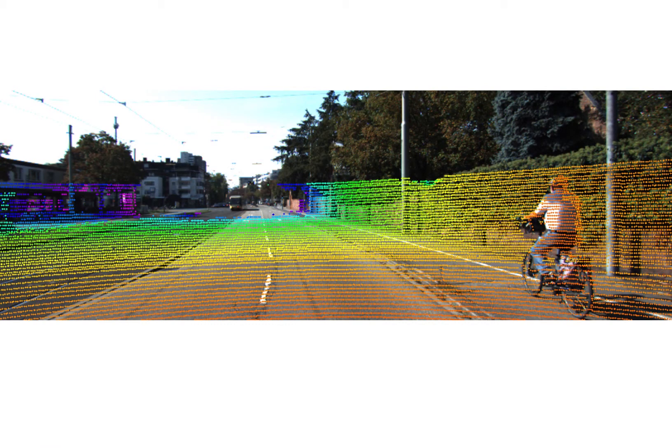Also, we wrote a function for the LiDAR and RGB image fusion. This is an example image. As you can see, we fuse the point cloud and the RGB image together. The color of the point cloud is with respect to the distance from the sensor to the particle.